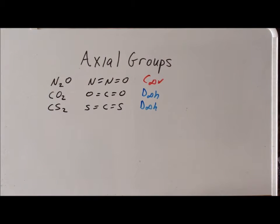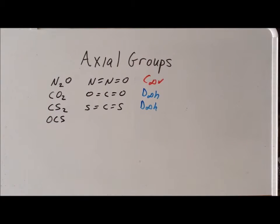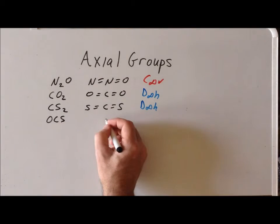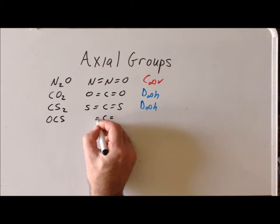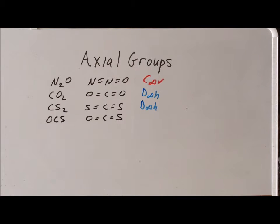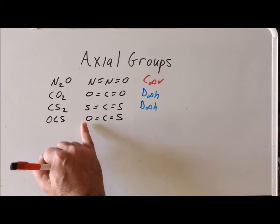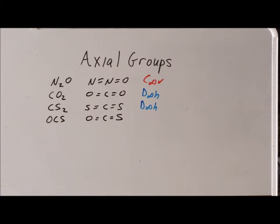But if we replace just one of the sulfurs with an oxygen, we end up with the molecule OCS, which goes by the name carbonyl sulfide. This is as if we took carbon dioxide and replaced just one of the oxygens with a sulfur. This will also be a linear molecule by VSEPR arguments. However, a mirror plane through the central carbon atom would reflect oxygen into sulfur, which are not identical. So there is no horizontal mirror plane, and we assign carbonyl sulfide to the point group C∞v.